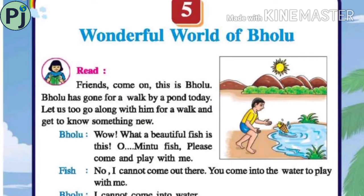EBS class fifth, chapter number five: Wonderful World of Bholu. We have learned half of the lesson in part one. Now the remaining half I will explain in this video. In the first part, I explained the story of Bholu — how Bholu encountered two different animals like fish, elephant, tortoise, pigeon, squirrel, etc.